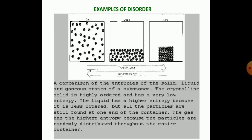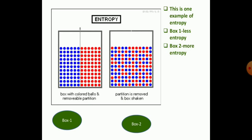Examples of these disorders can be visualized by comparing the entropies of solid, liquid and gaseous states. A crystalline solid is highly ordered and has very low entropy, while a liquid has higher entropy because it has less order. But the gas has the highest entropy because particles in a gas are freely distributed throughout the entire container.